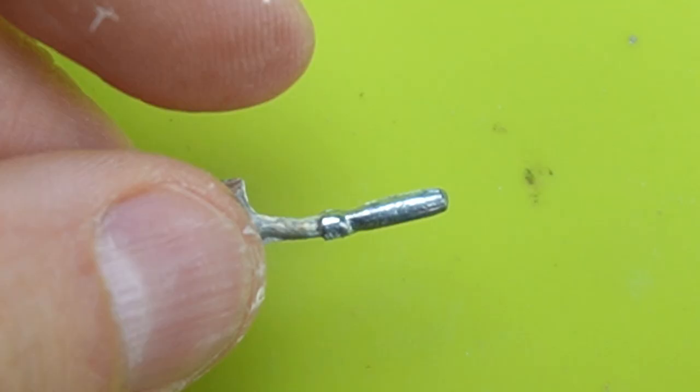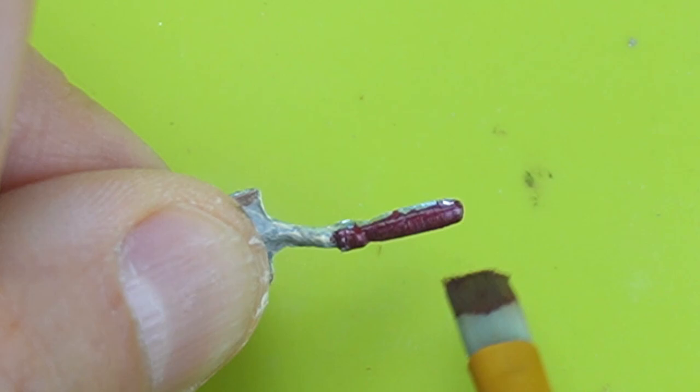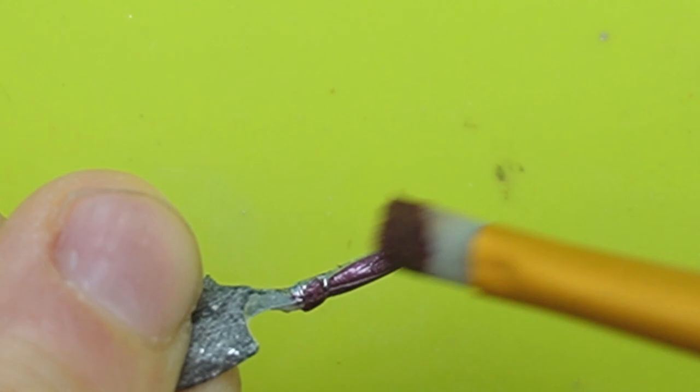I painted the handle with a mixture of dark brown paint and red plus a little mod podge. I added two coats so I wouldn't be able to see the shiny metal underneath.